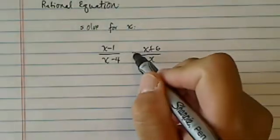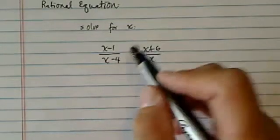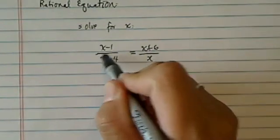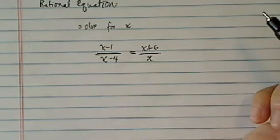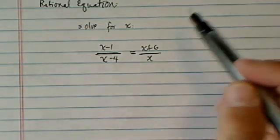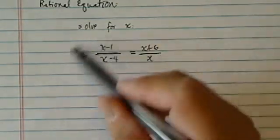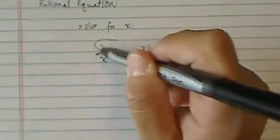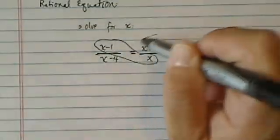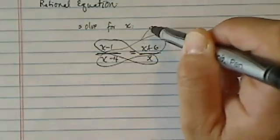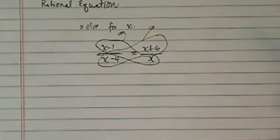A rational equation, of course, involves division or fractions. I don't know about you, but I don't like fractions. So in a simple term that looks like this, where there's no other terms, the easiest way to get rid of fractions is what I teach my students — the butterfly method.